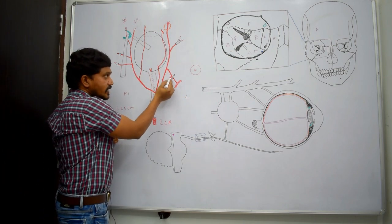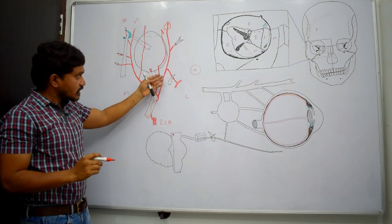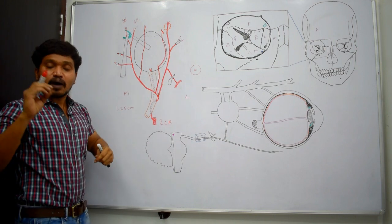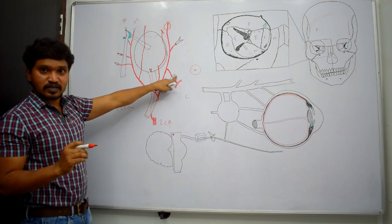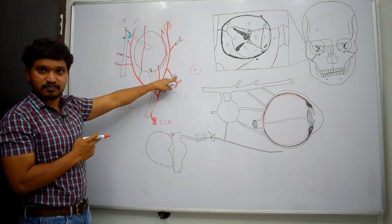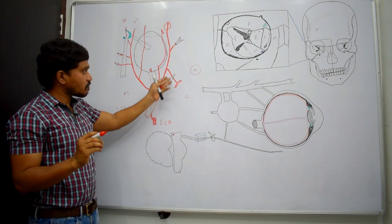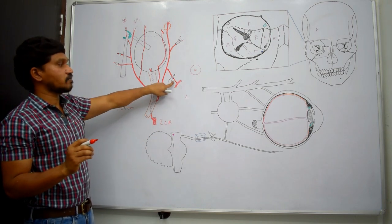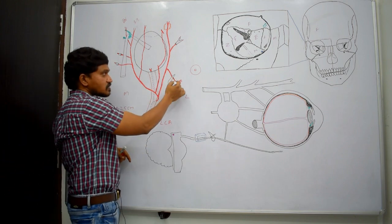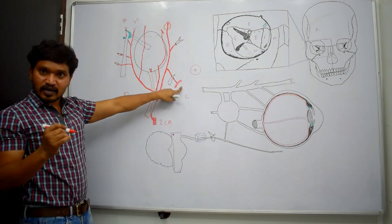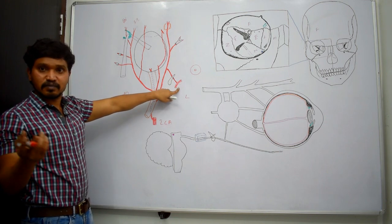The lacrimal artery also gives one recurrent branch. This recurrent branch comes back through the upper or lateral part of the superior orbital fissure. Through the lateral part of the superior orbital fissure, the recurrent meningeal branch from the lacrimal artery passes and anastomoses with the middle meningeal artery to supply the meninges.